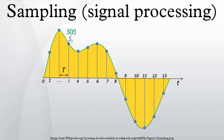For functions that vary with time, let s be a continuous function to be sampled, and let sampling be performed by measuring the value of the continuous function every T seconds, which is called the sampling interval. Then the sampled function is given by the sequence s(n*T) for integer values of n.